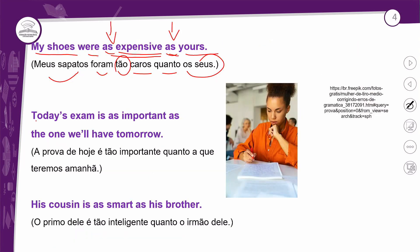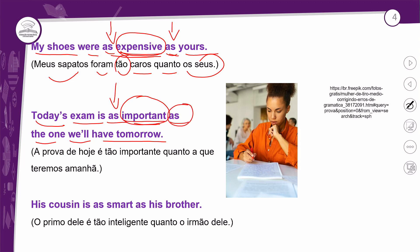Próximo exemplo: a prova de hoje — today's exam. Perceba que isso aqui é o caso genitivo, com apóstrofo e S representando a questão da posse. O exame é de hoje. Caso genitivo é essa questão do S ao fim de uma palavra precedido de apóstrofo. A gente tem muito isso em nome de loja, por exemplo, Sandra's confecções — esse S não significa plural, é o caso genitivo.